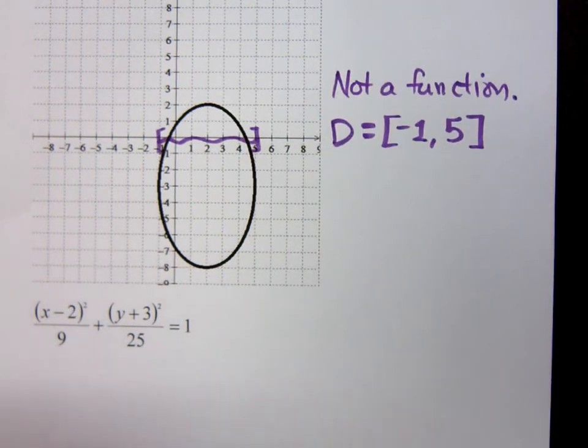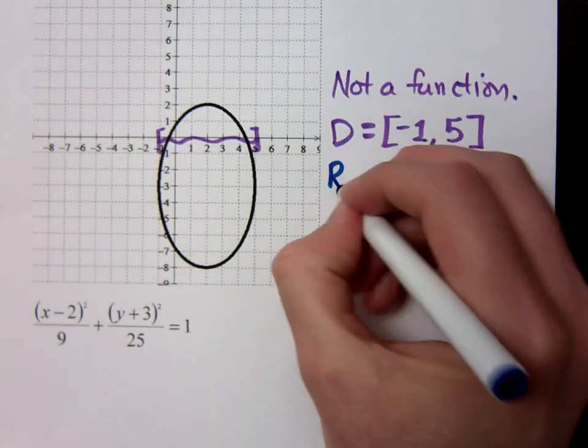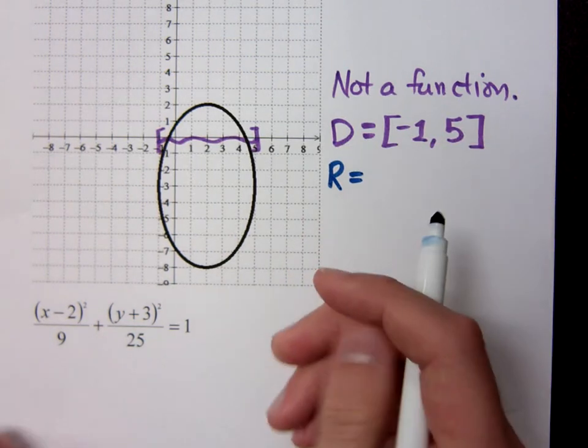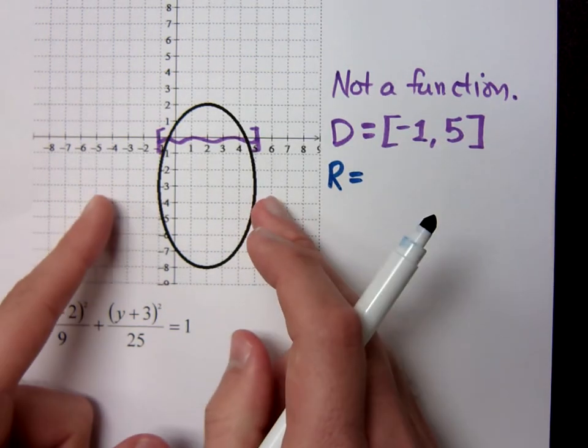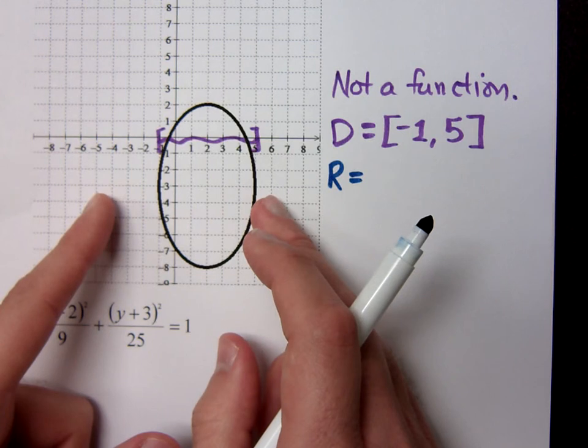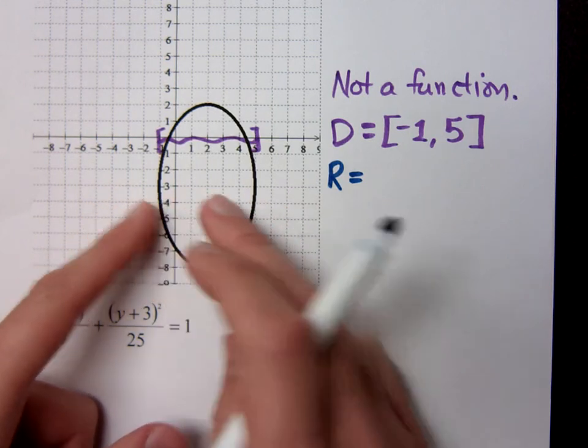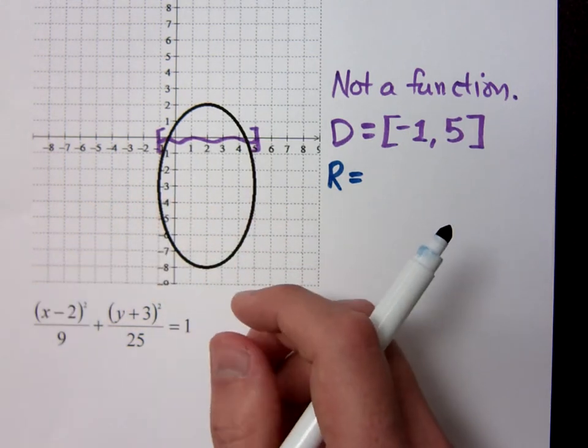And it's very similar to what you would do to find the range. To find the range, you would just compress everything onto what? Onto the y-axis. So if I do that, what's the lowest this guy gets?